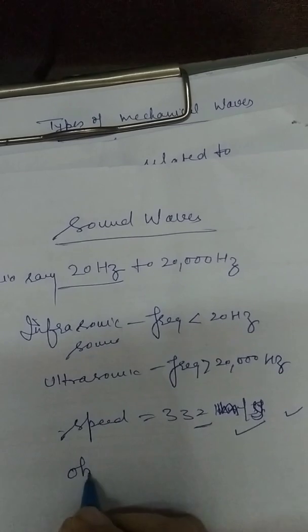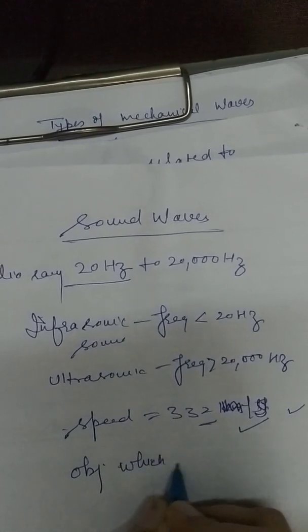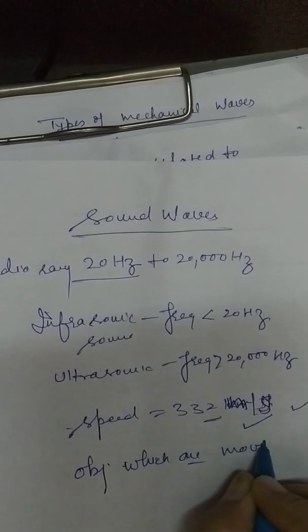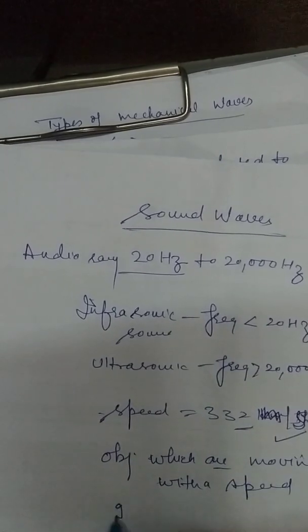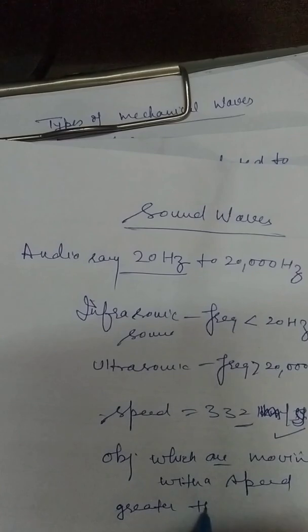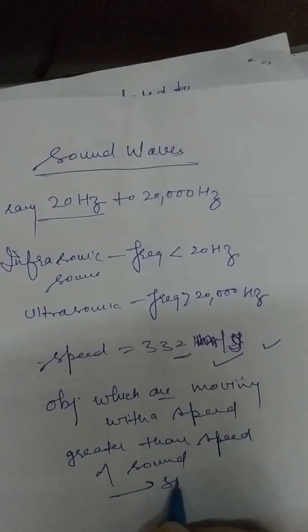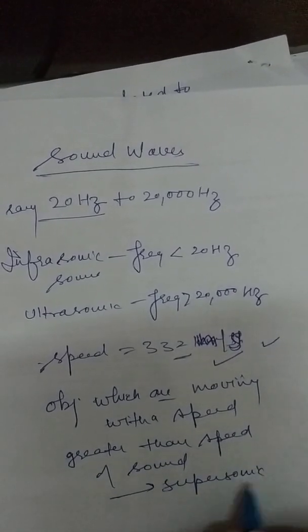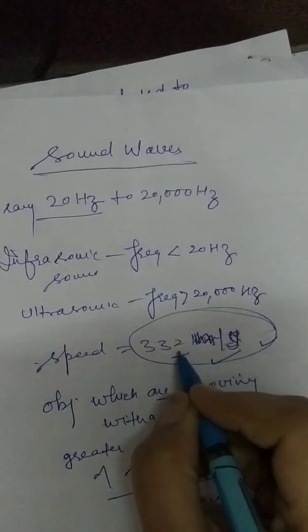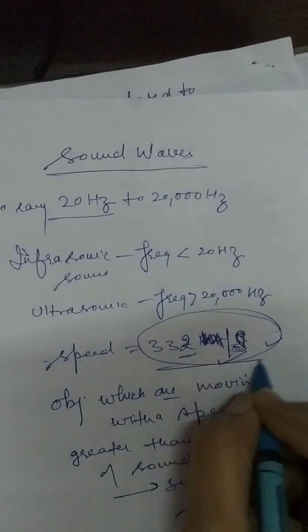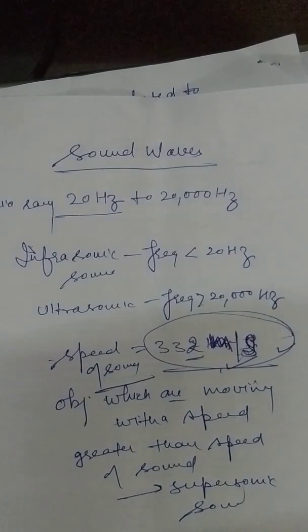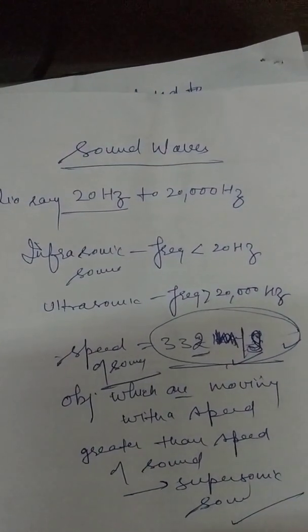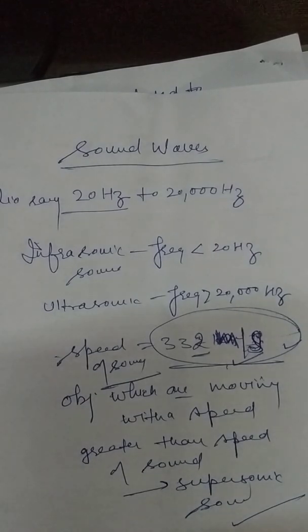Objects moving with a speed greater than the speed of sound are called supersonic. The speed of sound in air is 332 meters per second. In the next video, we will discuss the speed of transverse waves in a stretched string. Thank you.